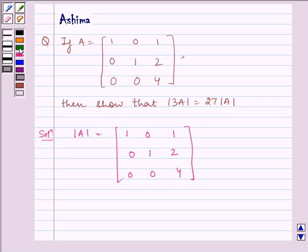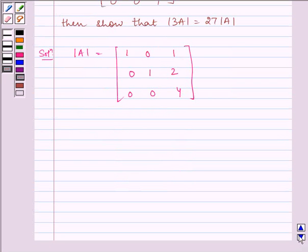Now solving this, we get, which is equal to 1 multiplied by 1 times 4 minus 2 times 0, then minus 0, then minus 0, 0 times 4 minus 0 times 2, then plus 1, 0 times 0 minus 1 times 0.